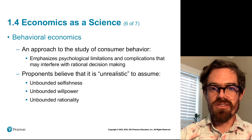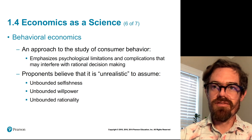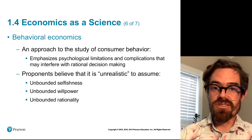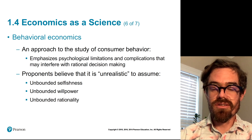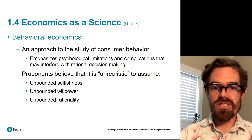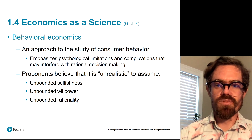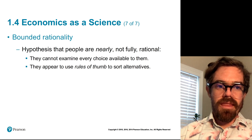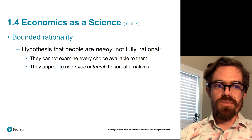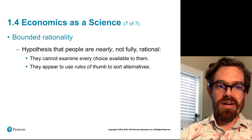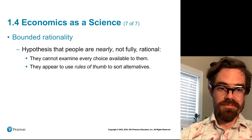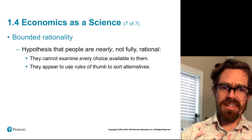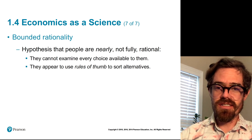Furthermore, we don't necessarily have all the information regarding those alternatives. That's another aspect of bounded rationality. We can't examine every single choice available to us, and in many cases — perhaps most cases — we use rules of thumb to sort alternatives. If you've ever been to a new restaurant where you've never seen the menu, you're probably familiar with using rules of thumb to sort through the alternatives.